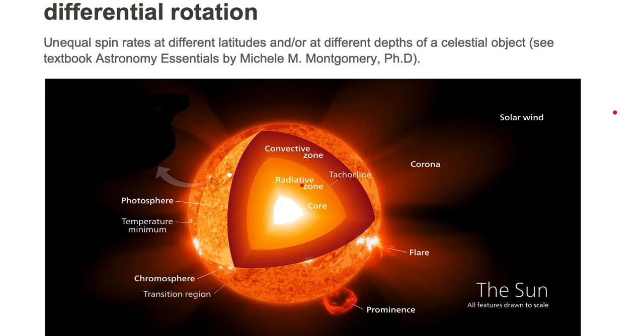Because the radiative zone and convective zone move at different rates of rotation—in other words, they have unequal spin rates at different depths—the sun differentially rotates. The interior layers rotating at different speeds causes this differential rotation.